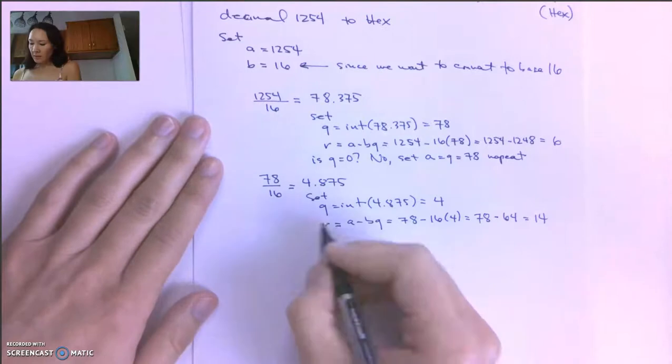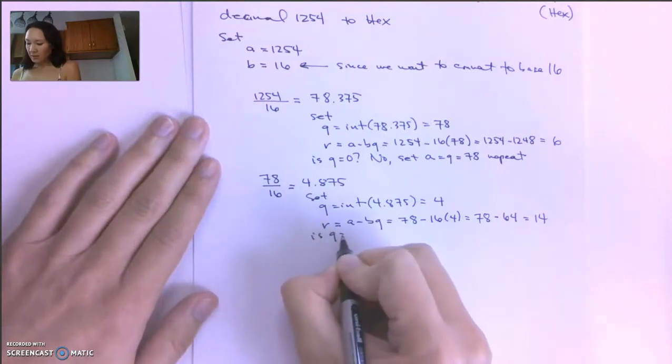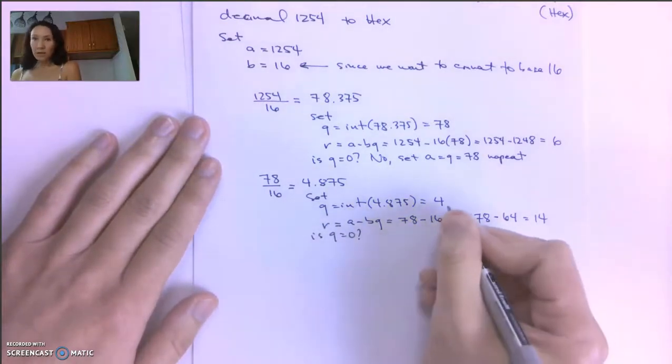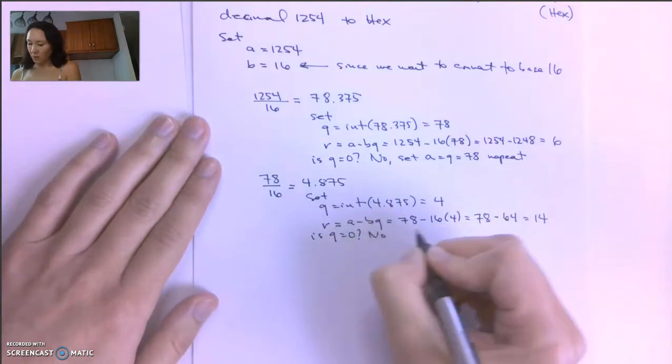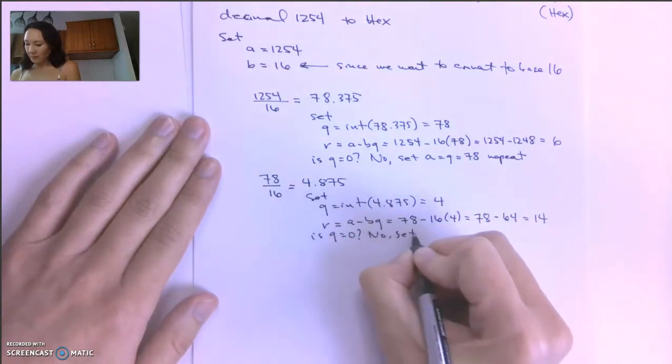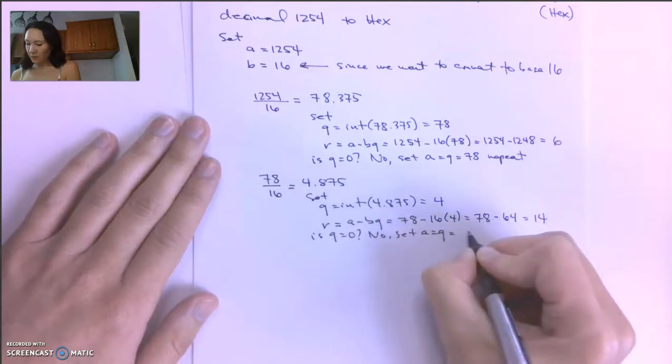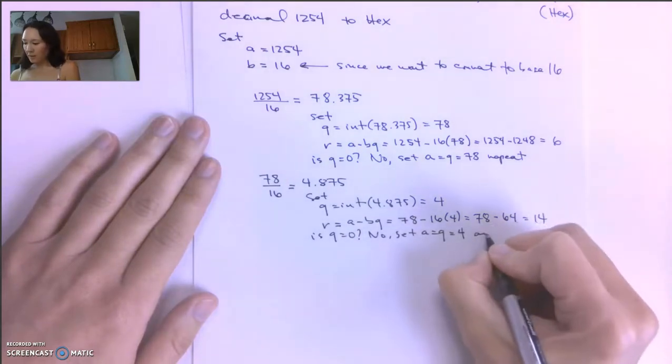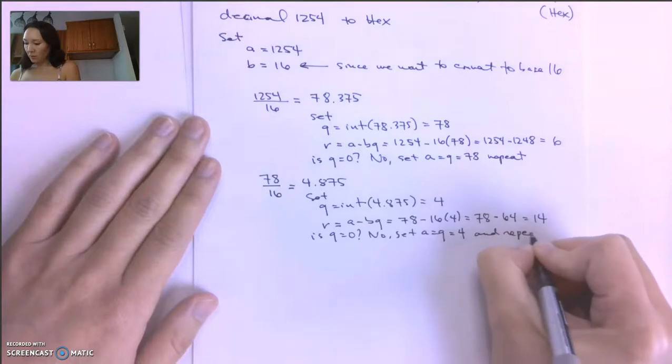Now we ask ourselves again, is Q equal to 0? Our Q is 4, so the answer is no. So we'll set A equal to Q equal to 4, and we'll repeat.